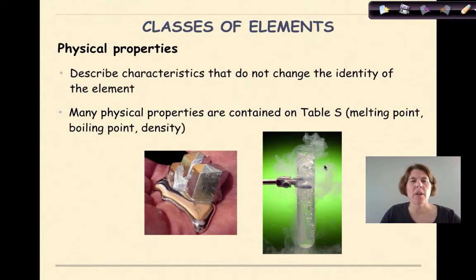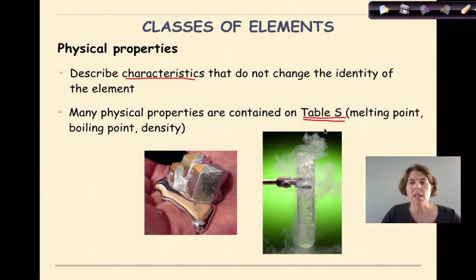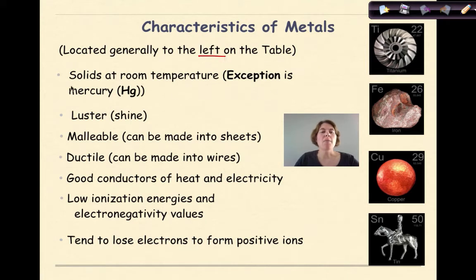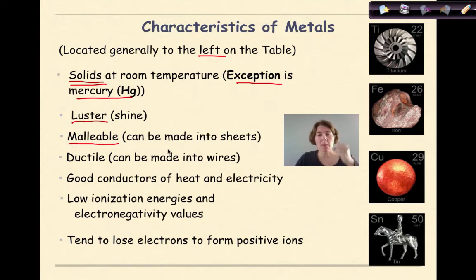Now let's talk about how we classify an element. One way is to look at its physical properties, which describe characteristics that do not change the identity of the element. Many physical properties are found in Table S of your reference table — the melting point, boiling point, and density. Different elements are going to have different physical properties. Metals are located generally on the left-hand side of the periodic table.